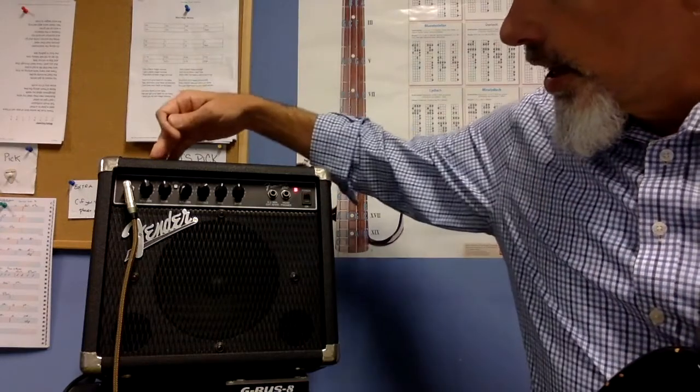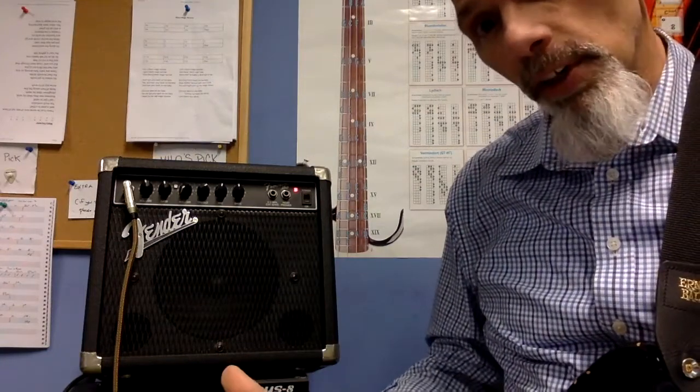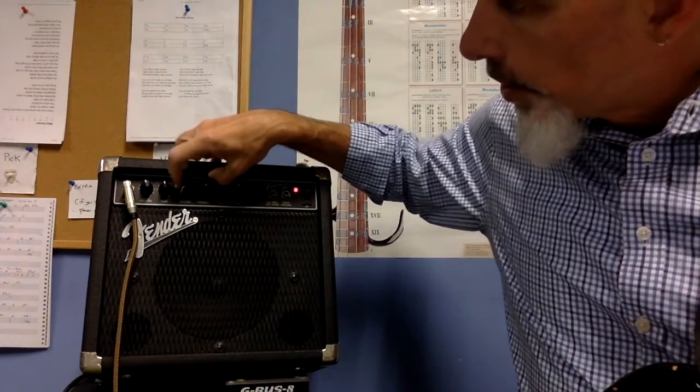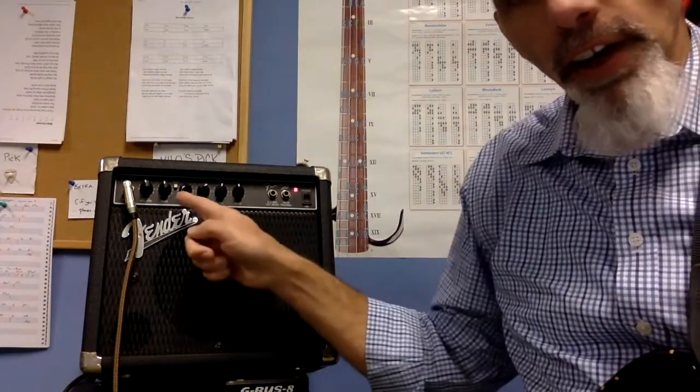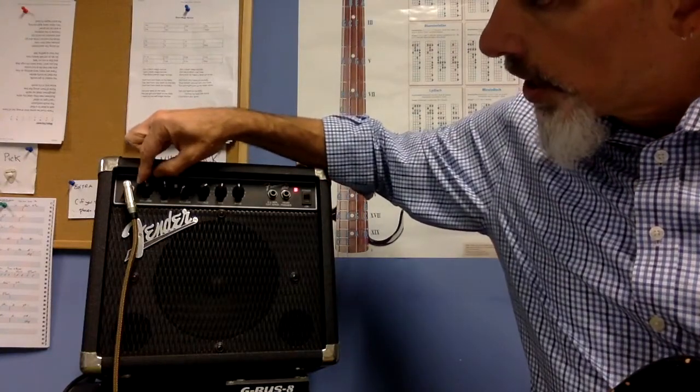Now, to understand how this works, the amplifier obviously amplifies. It makes bigger the sound. I have this little channel. I'm going to select it right here. I can be clean, so it's very clean, and that volume is right here.